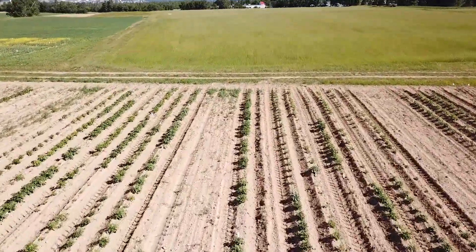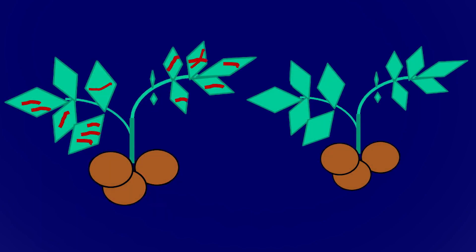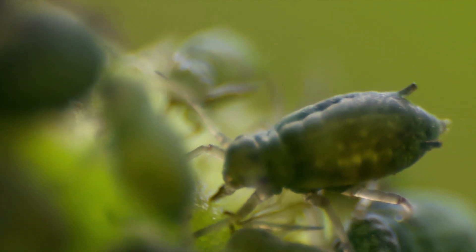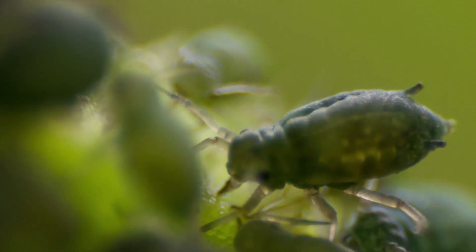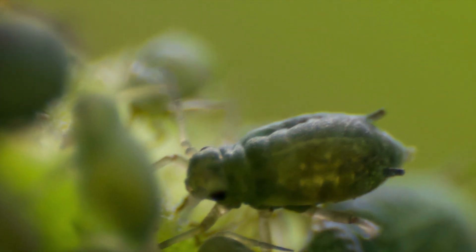Potato virus Y can be transmitted to potato plants via mechanical transmission by equipment and possibly by seed cutting. However, the primary method of transmission is by aphids. PVY is a non-persistent virus. When an aphid probes a PVY-infected potato plant with its stylet or proboscis to determine whether it is suitable for feeding, PVY can be picked up within seconds. PVY does not remain with the aphid for very long — a few hours at most. Once acquired, the aphid can transmit it to one or two plants before the virus is cleaned off.